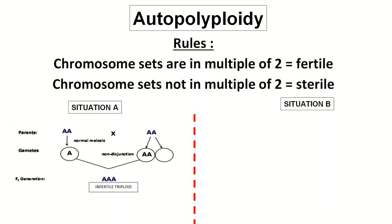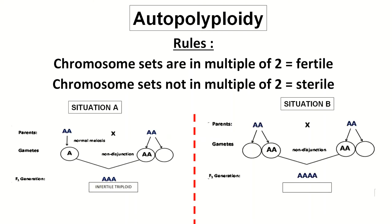For situation B, the F1 generation is produced by the fertilization of two unreduced gametes, causing the F1 generation to become tetraploid. Since the chromosome sets are in a multiple of two, the F1 generation becomes fertile.